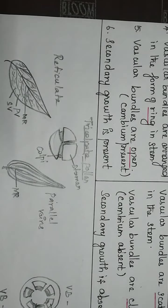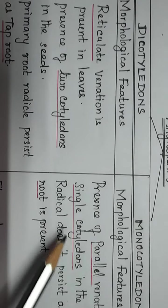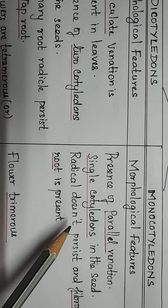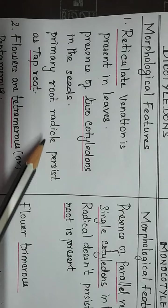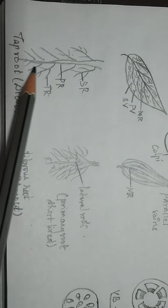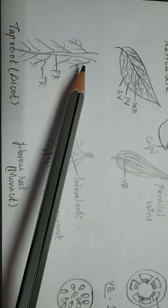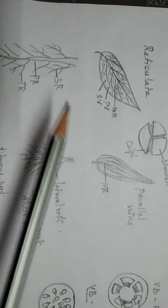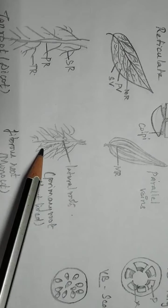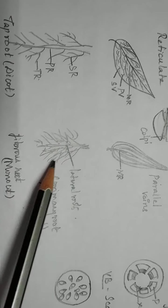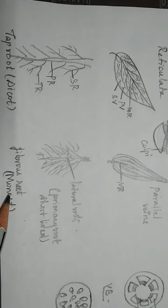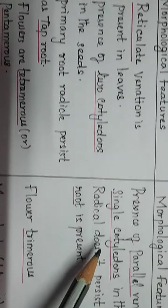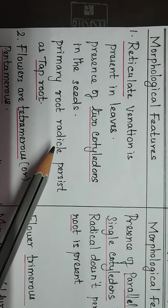In grasses and other monocot plants, parallel venation is present. Single cotyledon is present in the seed of monocots. In dicot plants, the radical persists as a tap root system — a primary root followed by secondary and tertiary roots. In monocot plants, the radical does not persist and forms a fibrous root system.